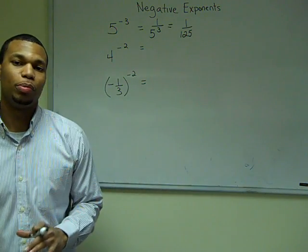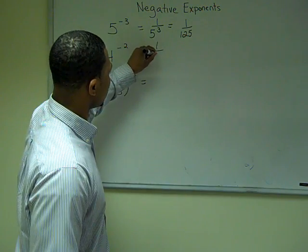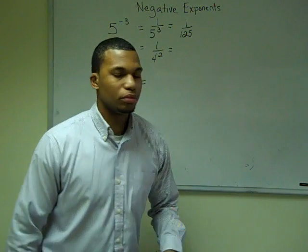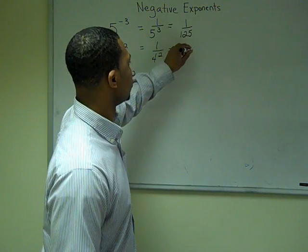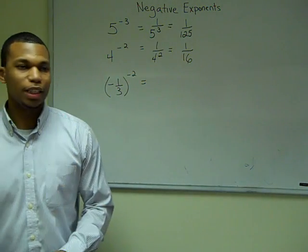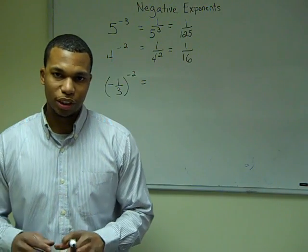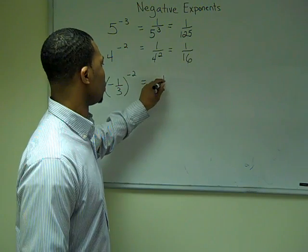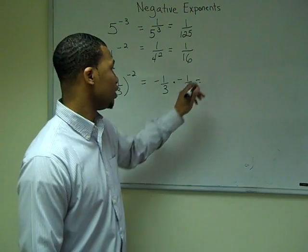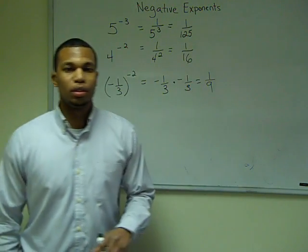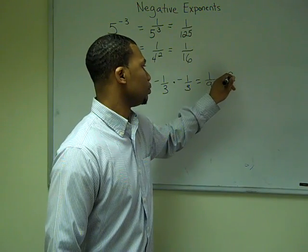If I have four to the negative second power, I'm going to find four to the second power first. Since four to the second power is 16, now I find the reciprocal of 16, which is one over 16. For our last problem, we have negative one third raised to the negative second power. We find negative one third times negative one third, which is positive one ninth. Then we find the reciprocal of one ninth, which is nine. So our answer is nine.